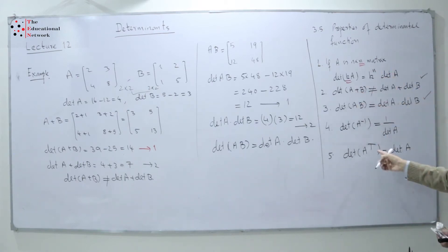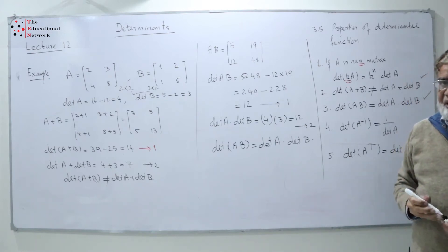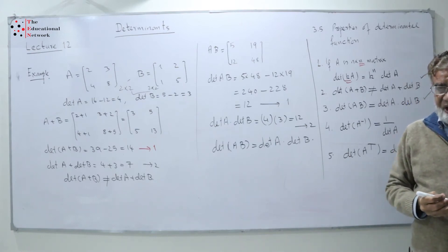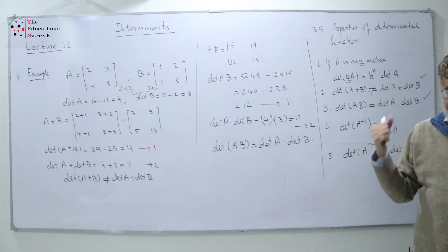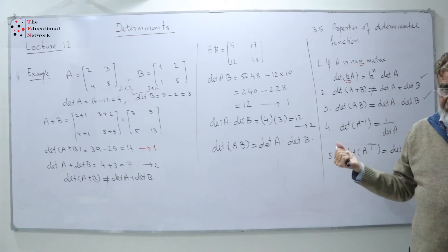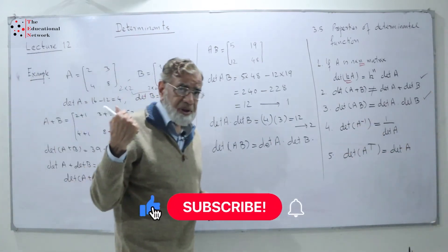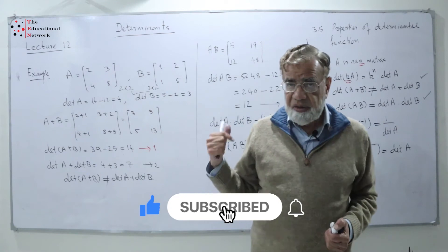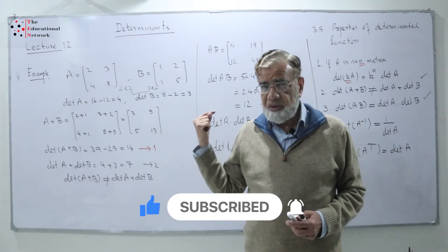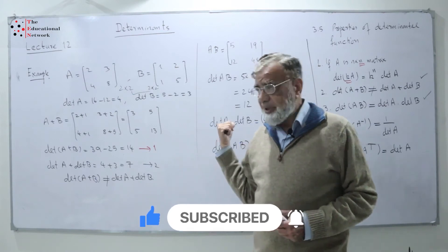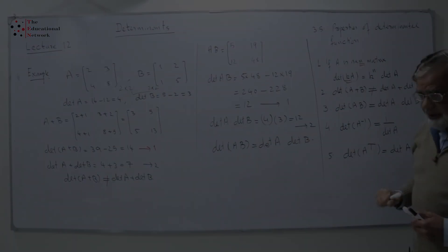So that is the result: when we multiply matrices we have determinant of A times determinant of B, but when we add them it is not equal. As I told you before, when we take the transpose, the value of the determinant does not change — we expand from any row or any column and get the same result. In the next lecture I will give more examples related to row operations and properties of the determinant.